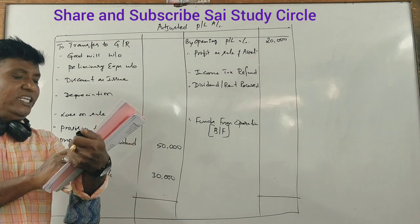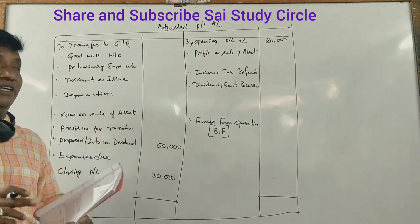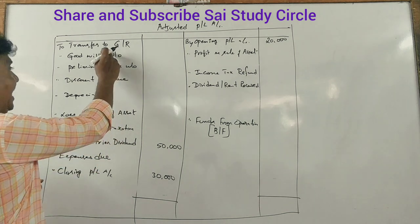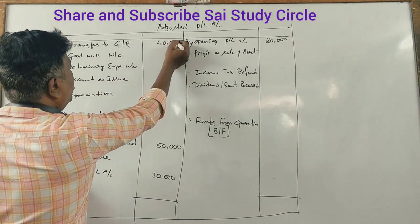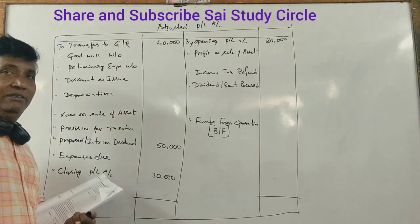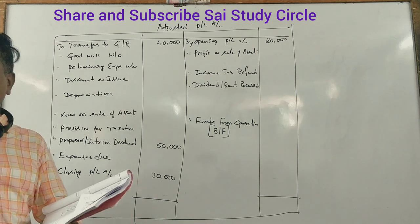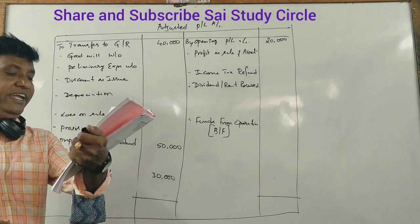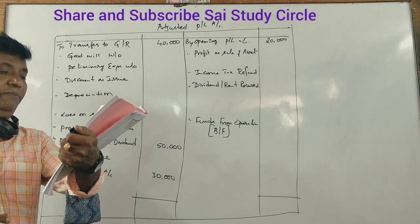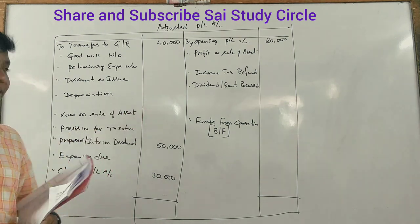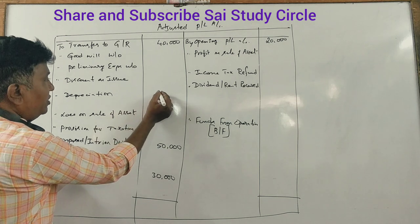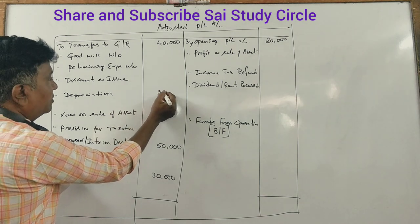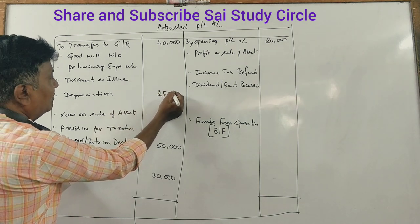Next adjustment: transfer to reserve of $40,000. After that, depreciation is $25,000 for the top of the year ending.